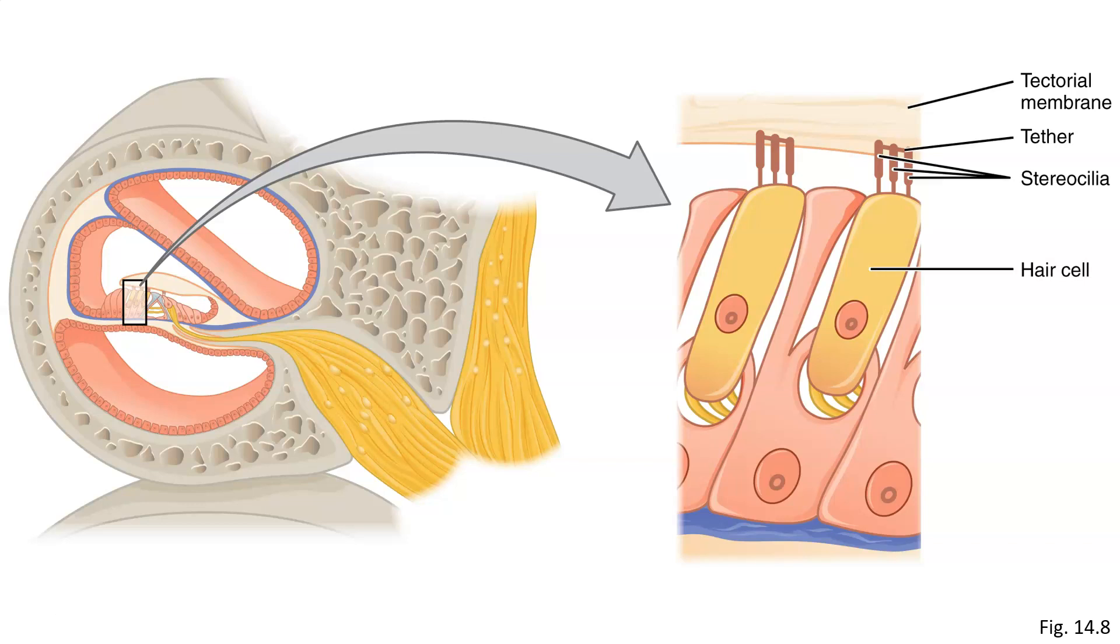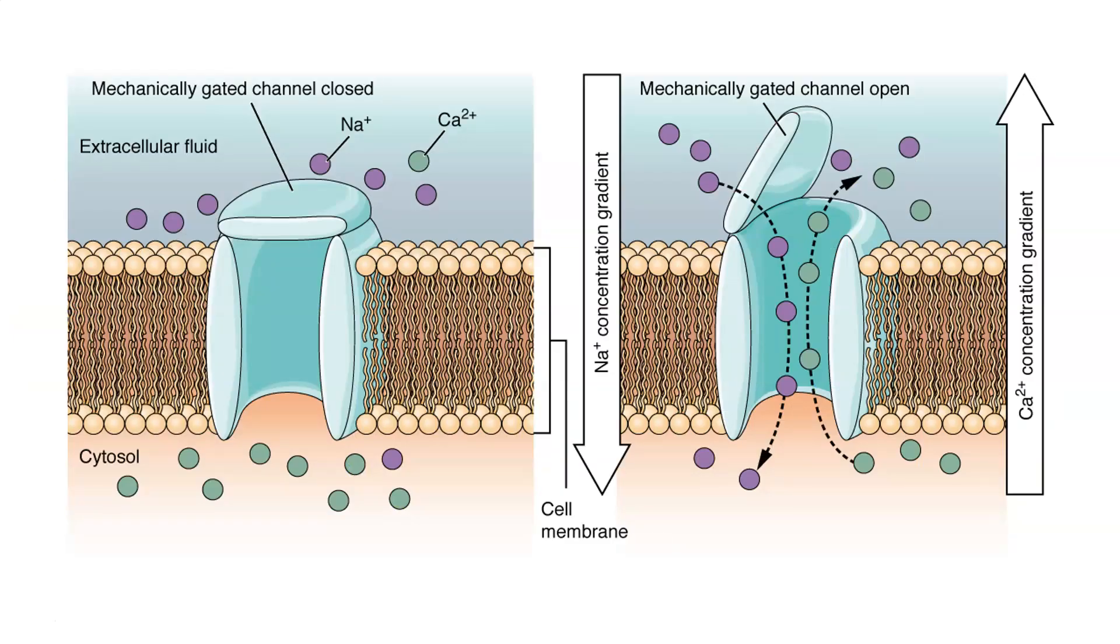When our ear picks up a sound, it causes the stereocilia on these hair cells to bend. It turns out that these hair cells have ion channels embedded on their membrane, and when these hair cells bend, it causes them to open. This in turn causes membrane depolarization to occur.